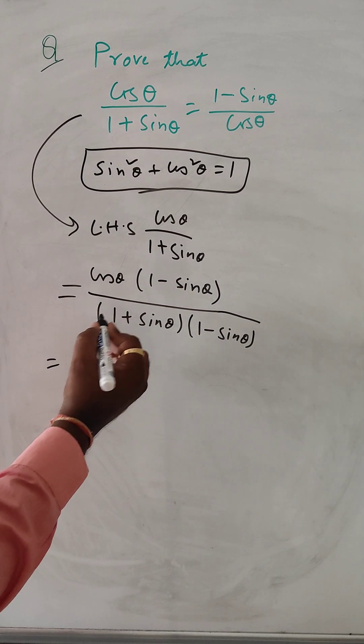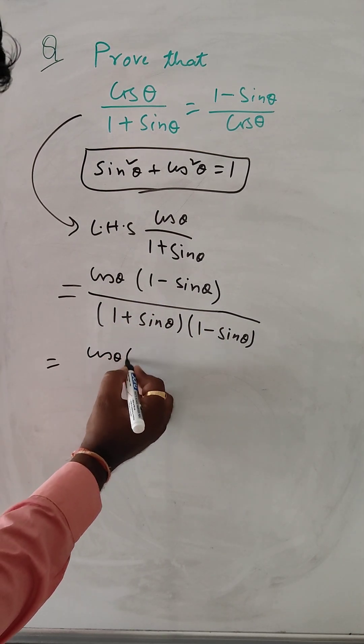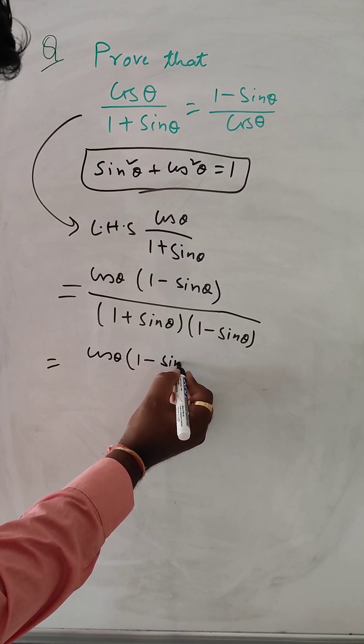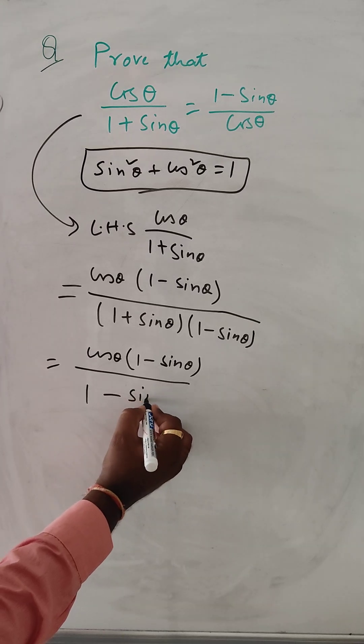So here that first one, this cos theta 1 minus sin theta and down 1 minus sin square theta.